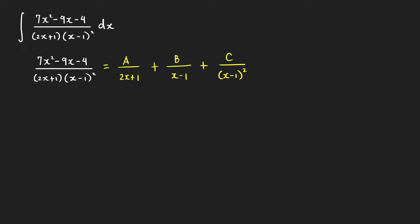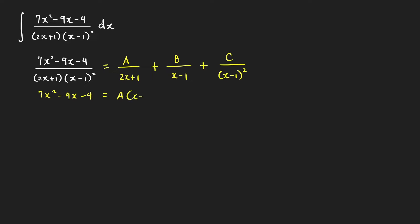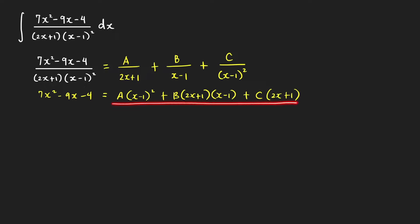The standard way to find the values of a, b, and c is to first multiply both sides of this equation by the LCD. Multiplying both sides by this expression, we get 7x² minus 9x minus 4 equal to A times (x minus 1)², plus B times (2x plus 1) times (x minus 1), plus C times (2x plus 1). One way is to expand all these products, find the coefficients of x², x, and the constant term, and equate them to 7, negative 9, and negative 4 respectively, obtaining three equations with three unknowns a, b, and c.